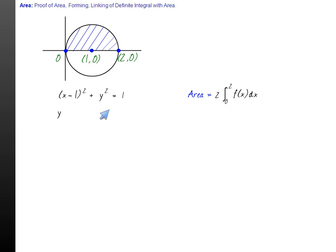Now what is f(x) here? y square is 1 minus x minus 1 whole square. So y, that means f(x) is plus square root of 1 minus x minus 1 whole square, because y is positive. So the area is 2 times integral 0 to 2 of square root 1 minus x minus 1 whole square dx.